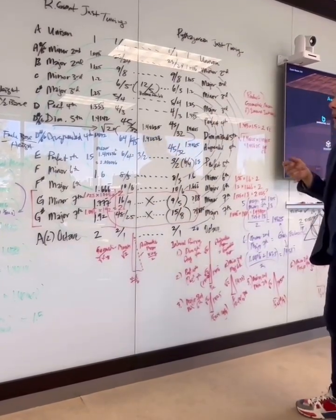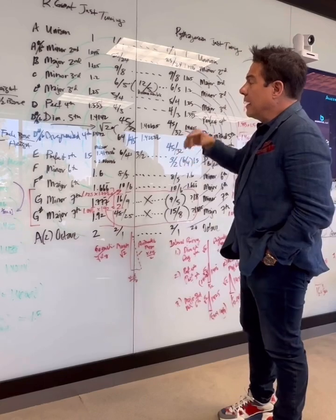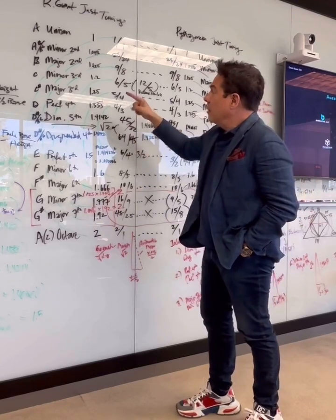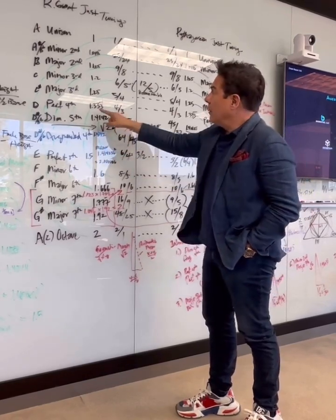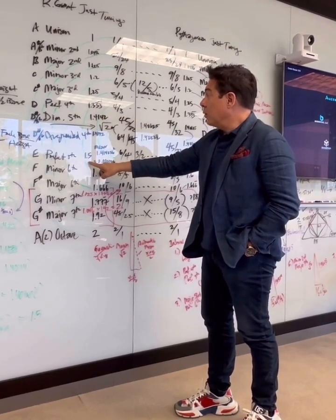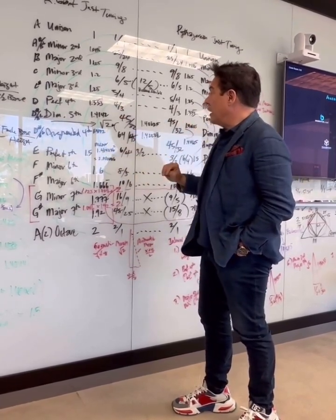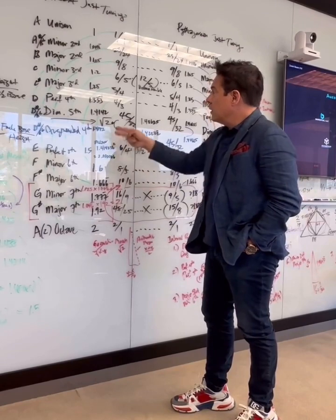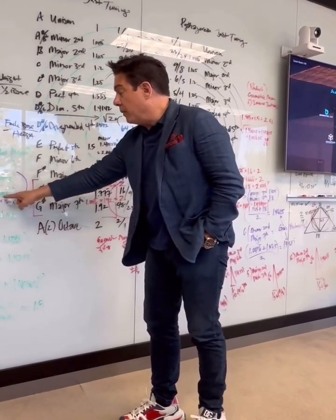I decided to look at this from a factorization perspective — what if we took the arithmetic mean values of each of these inverted interval pairings? I take the perfect fourth and the perfect fifth, add them together and divide by 2: 1.333 repeating plus 1.5 equals 2.833 repeating. Dividing by 2 gives a number pretty close to the square root of 2 — coming out to 1.416.